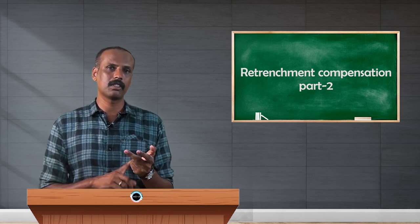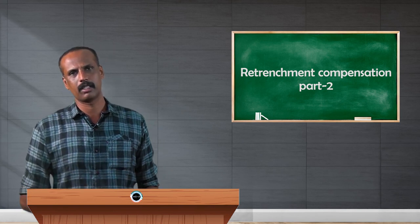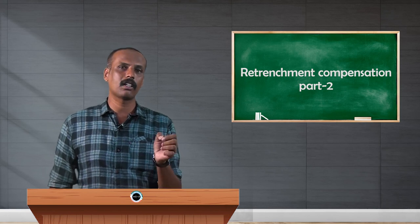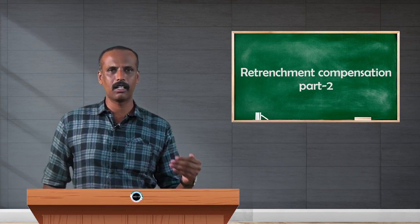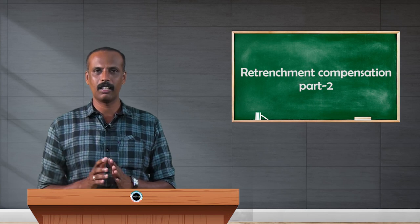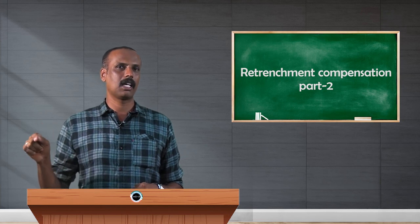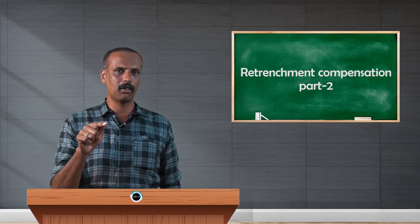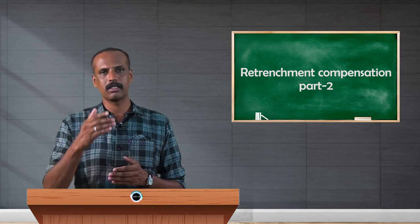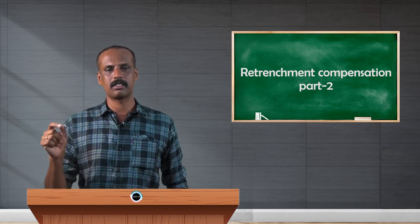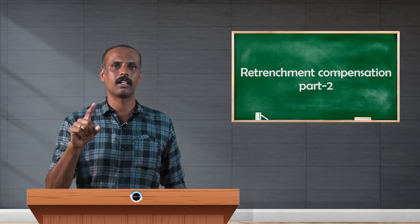Second, we must consider under which scheme the retrenchment compensation is received — whether as regular compensation or as per a central government scheme. Third, we consider what kind of employee he is: monthly wages employee, weekly salary employee, or daily wages employee. Then we calculate 15 days average pay, keeping in mind that average pay differs for each category. After that, we identify the least amount, which is eligible as exemption under Section 10 Subsection 10B, and the remaining amount is the taxable compensation.